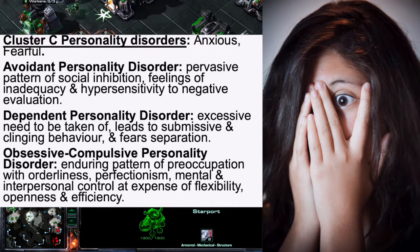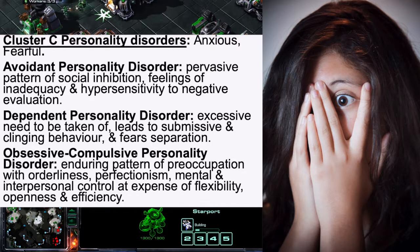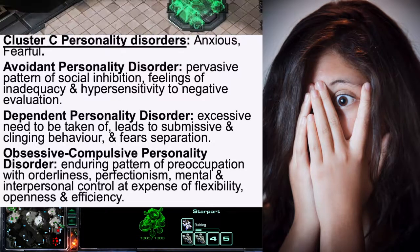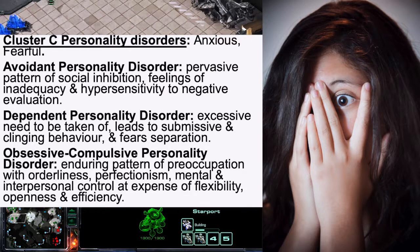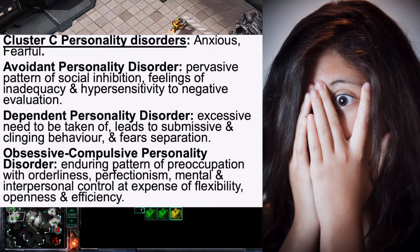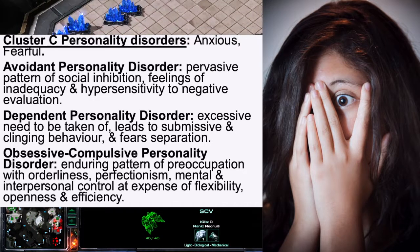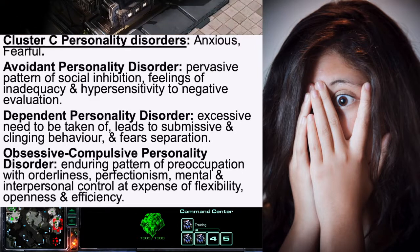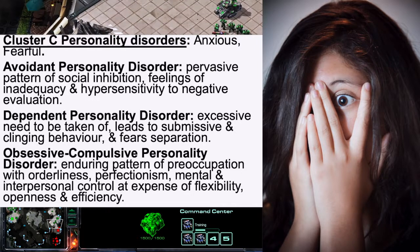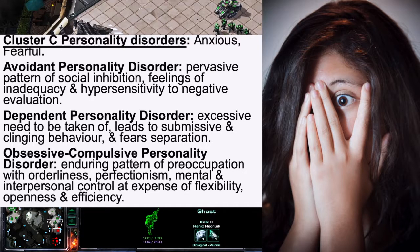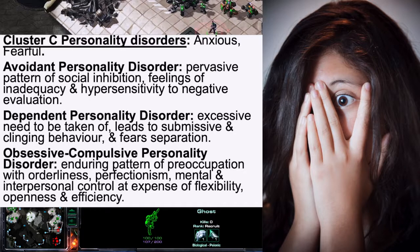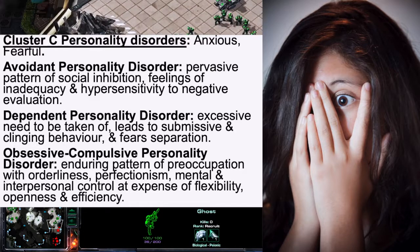Next, there is Dependent Personality Disorder — an excessive need to be taken care of, which leads to submissiveness and clinging behaviour. This individual fears separation. Similar to the attachment style discussion, the individual with Dependent Personality Disorder is not securely attached; they cling to their significant other, parent, or caregiver, which has detrimental consequences.